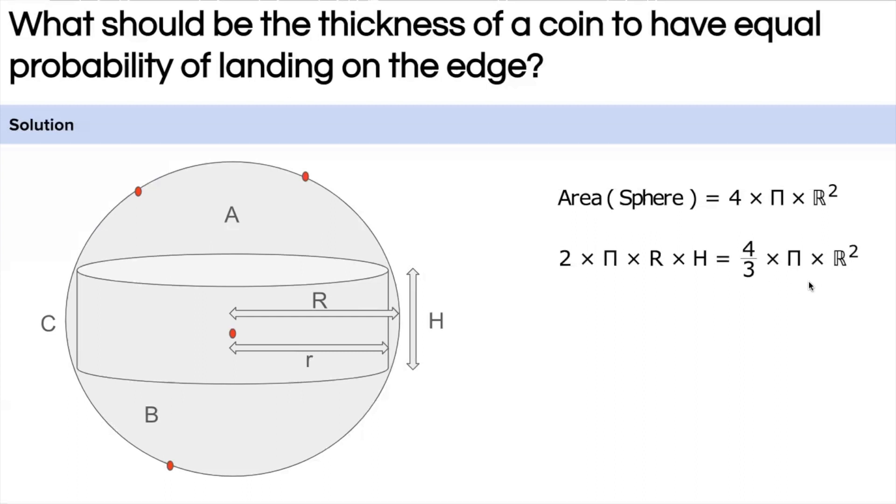But now we have to take the relation between small r and H, because we wanted to have thickness of the coin in terms of the radius. So we will apply the Pythagoras theorem.